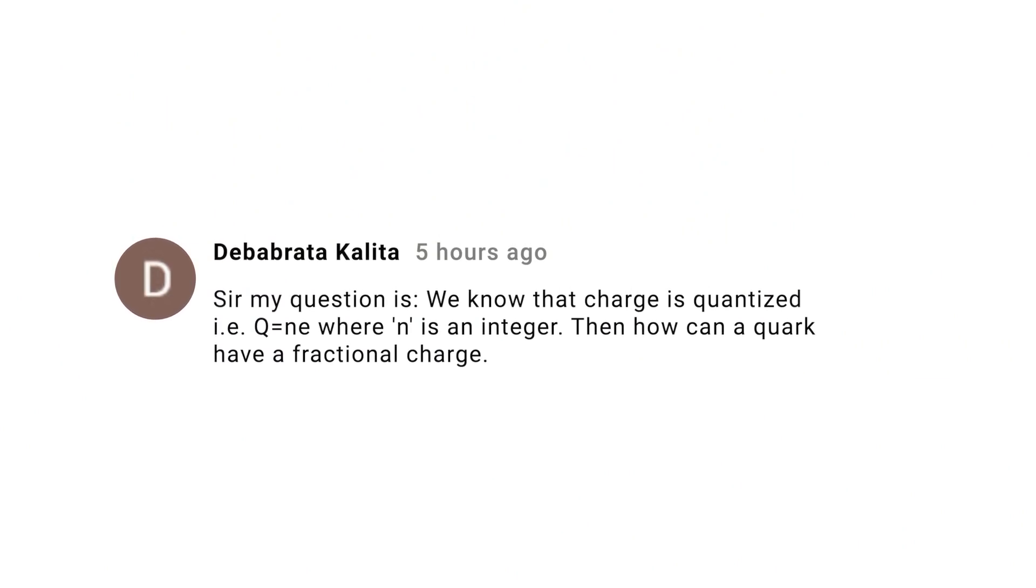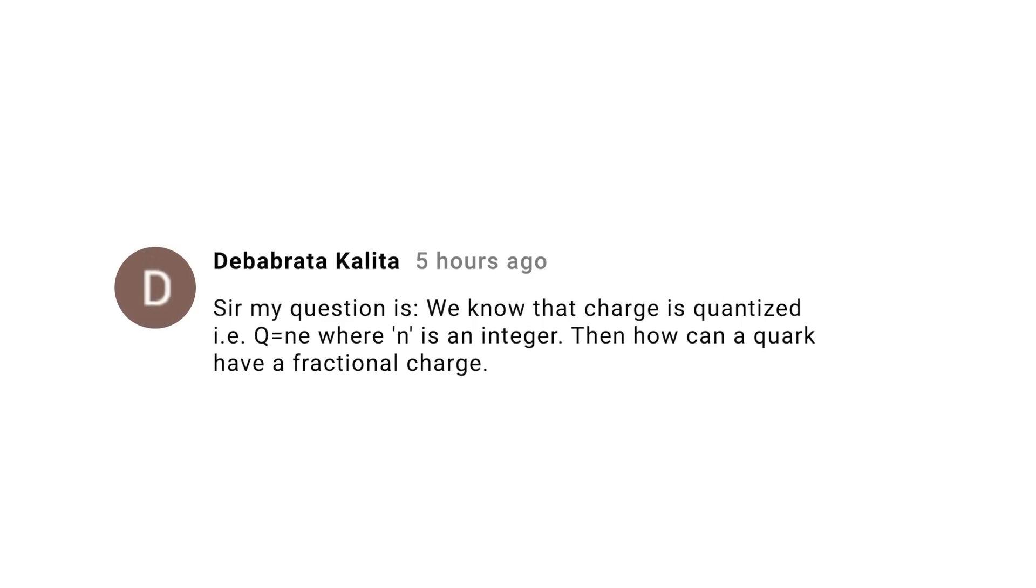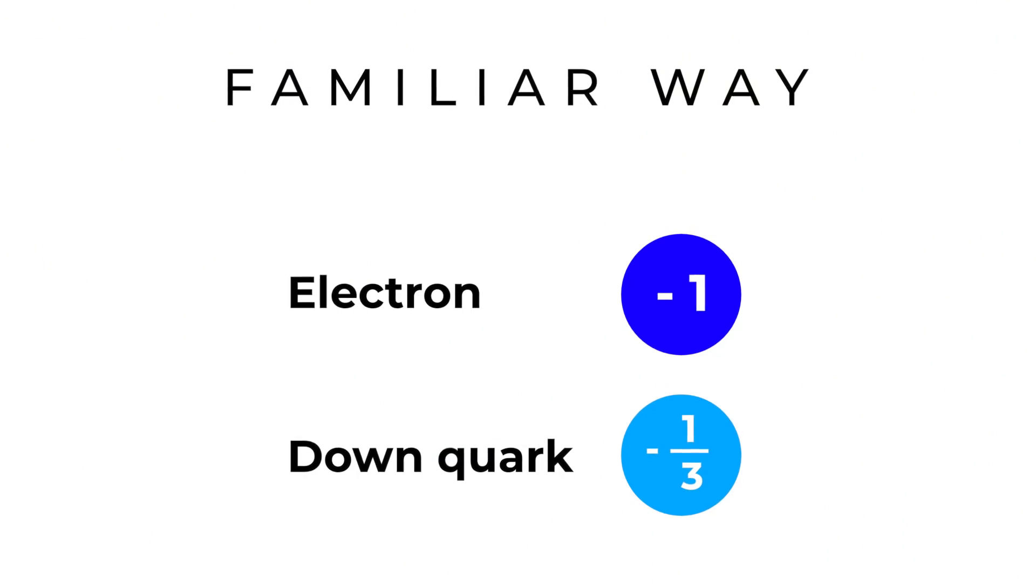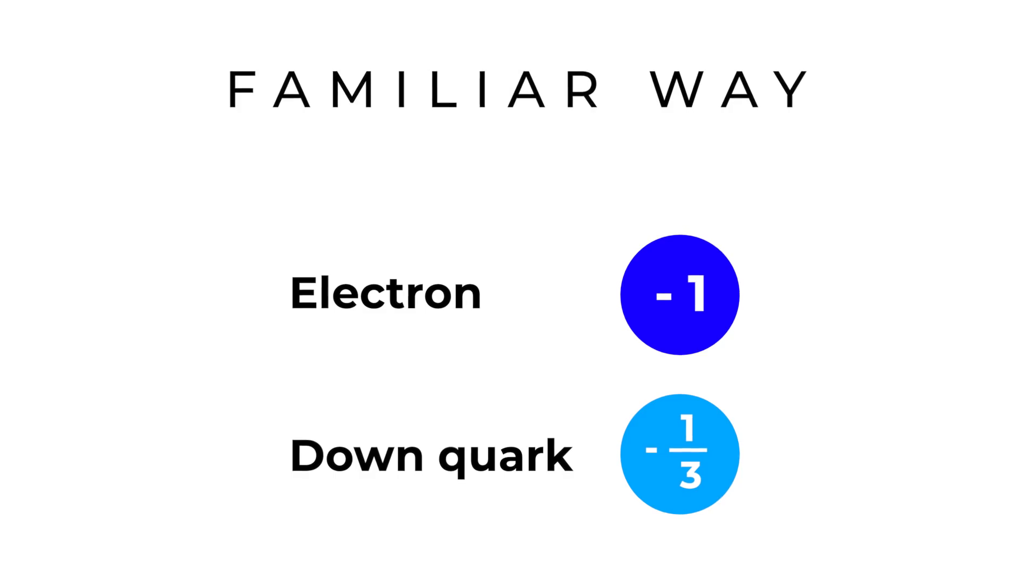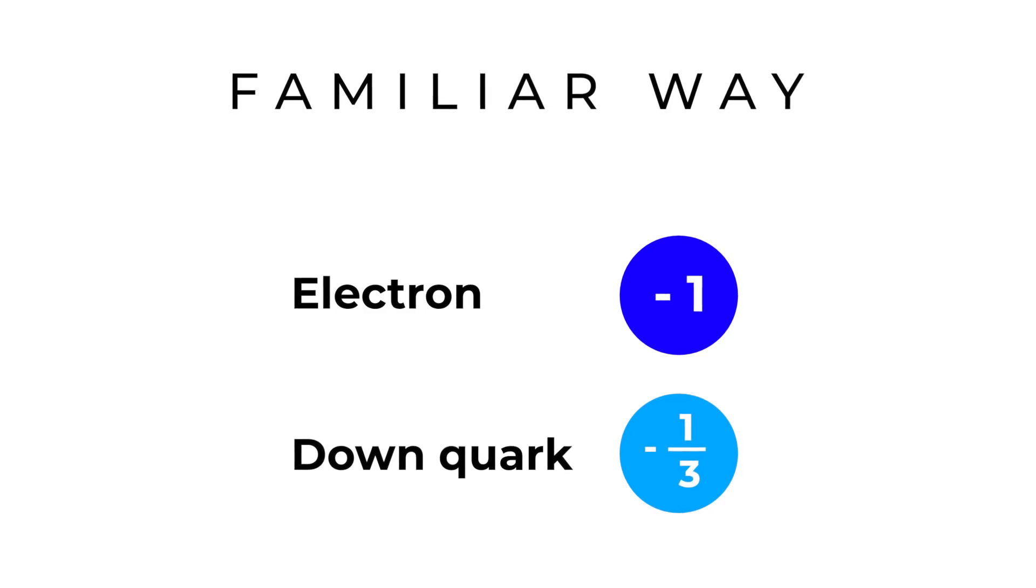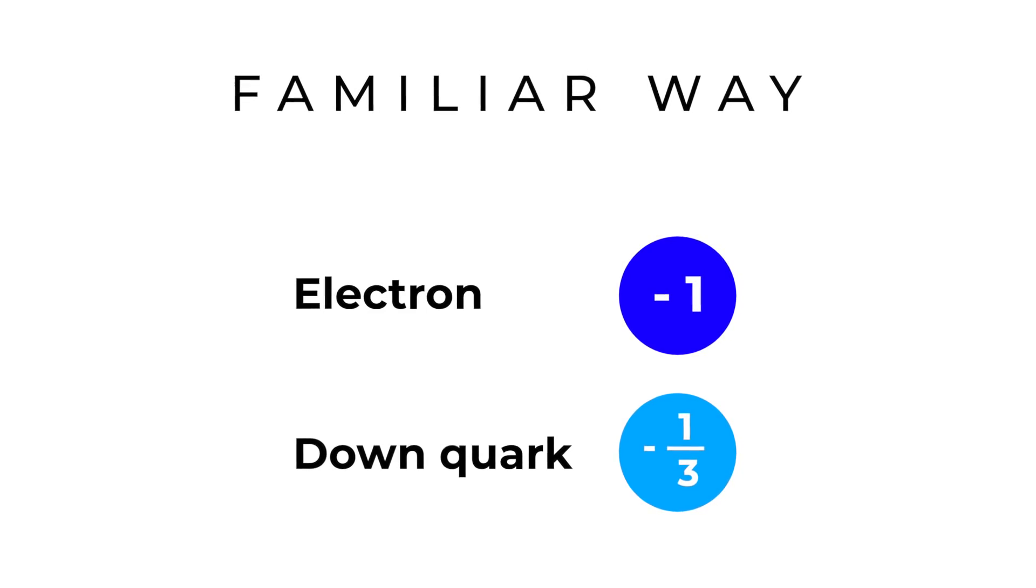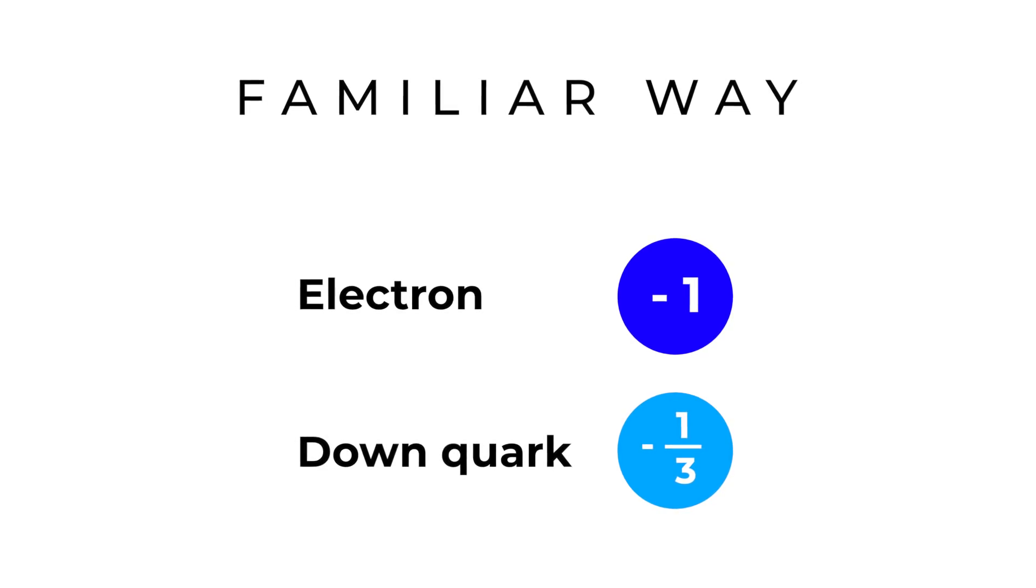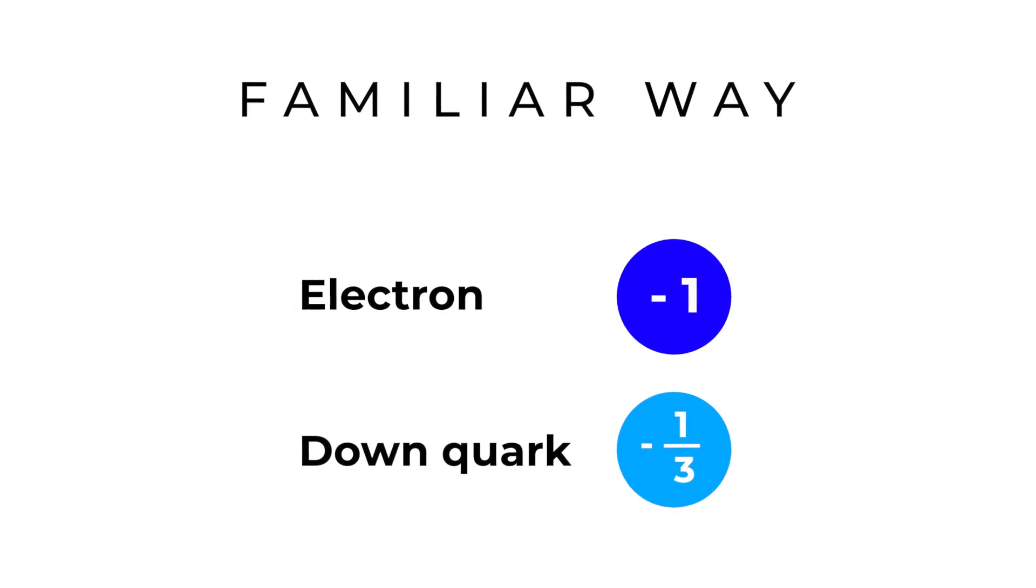Debrada Kalita asks about the quantization of charge. How can quarks have a fractional charge? To say a charge is quantized simply means that it comes in discrete lumps. Now, in the old days, we thought that the electron was the smallest charge, so that it had a charge of minus one. And that made perfectly good sense. However, when quarks were discovered, we realized that there were charges smaller than that. For instance, the down quark has a charge of minus one-third.